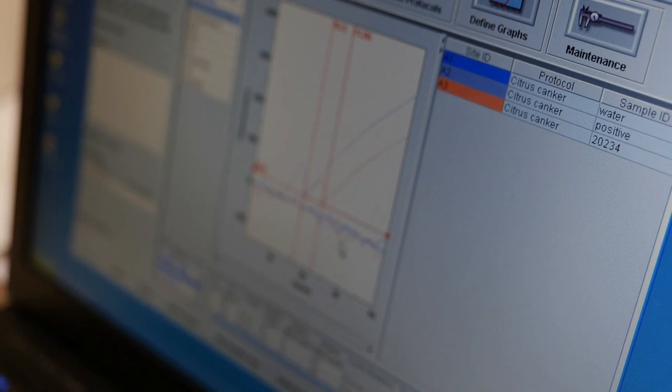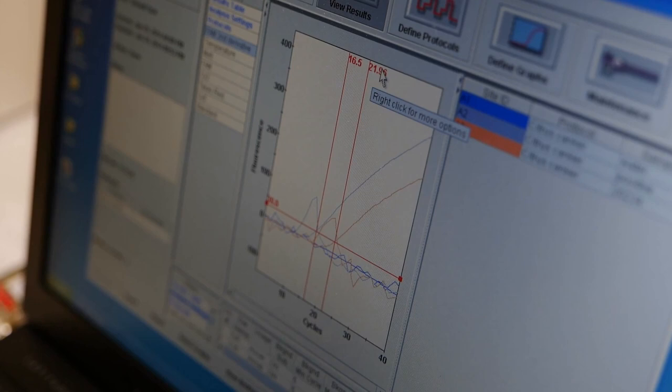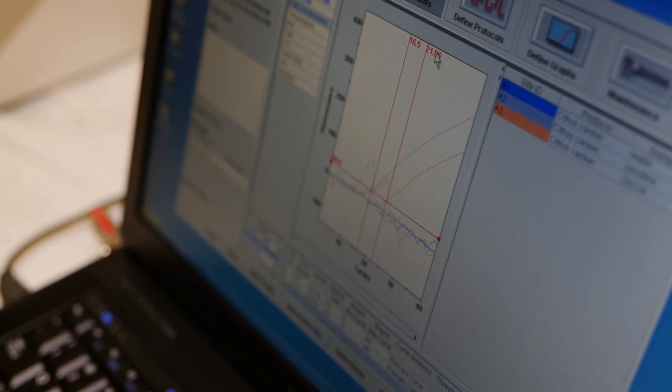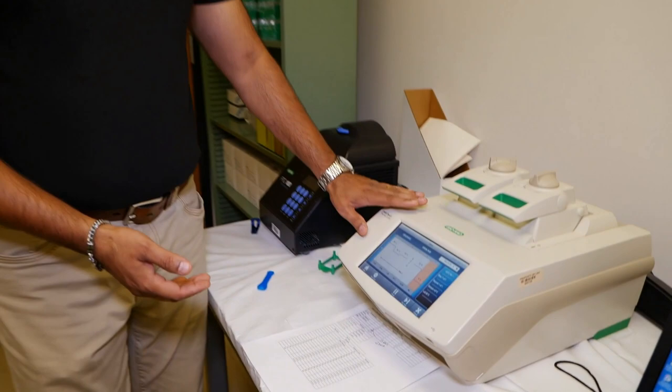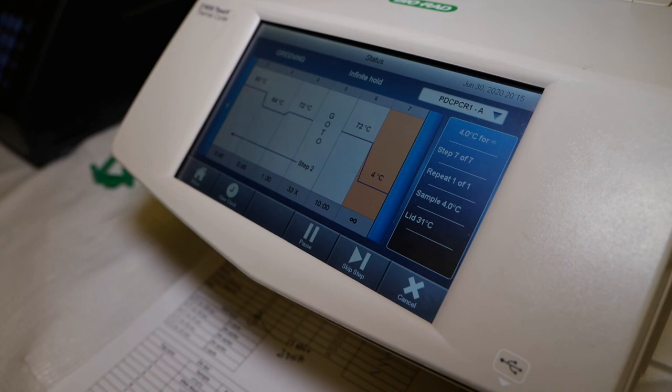For the sample to be a positive sample, it has to be in a range. It can't be after 30, 35 cycles. If it's after 35 cycles, that's not considered a positive sample.